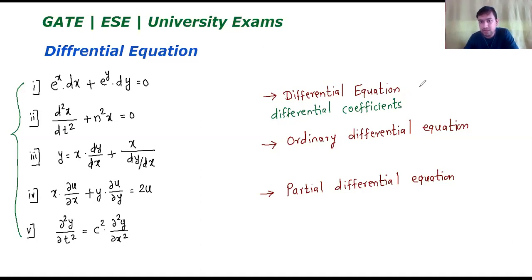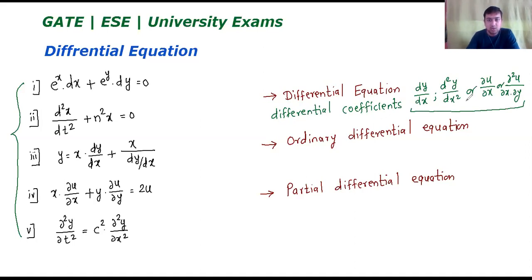What are differential coefficients? For example, dy by dx is a differential coefficient, or d squared y by dx squared, or del u by del x, or del squared u upon del x del y. These are all differential coefficients, as is the operator D. Such types of equations are called differential equations.